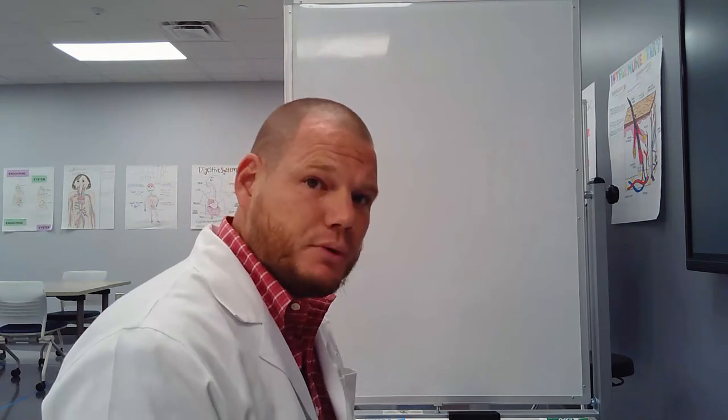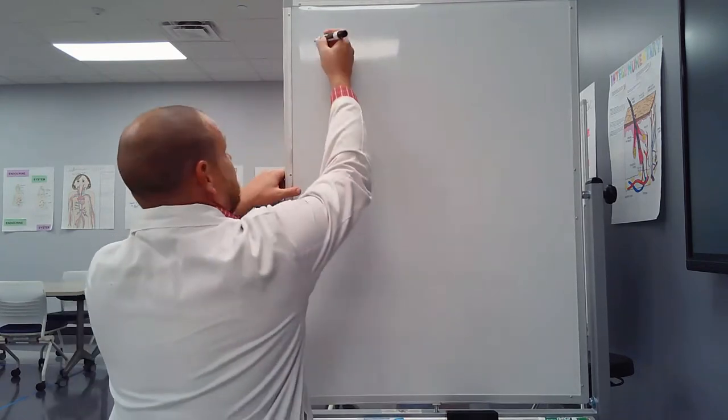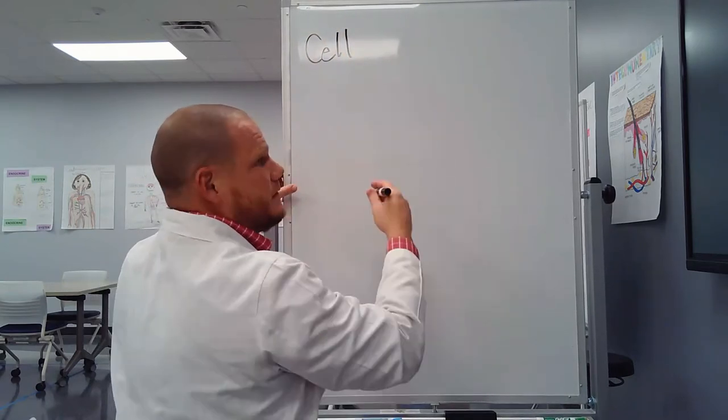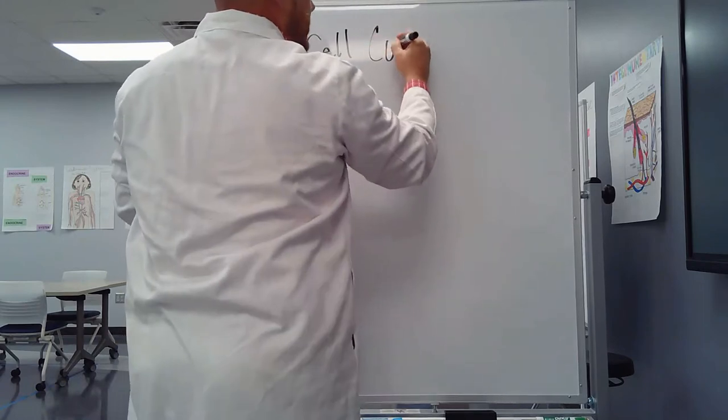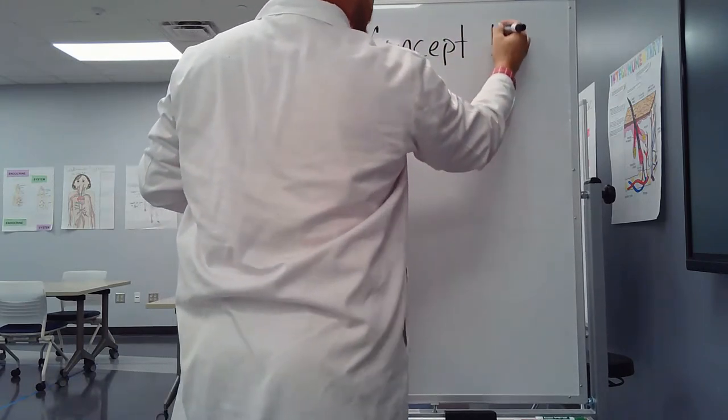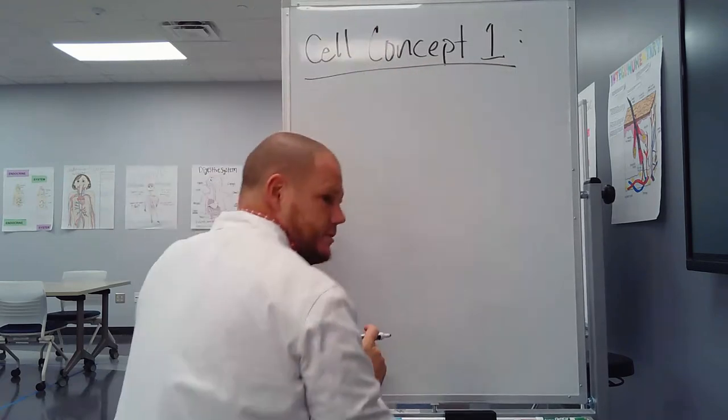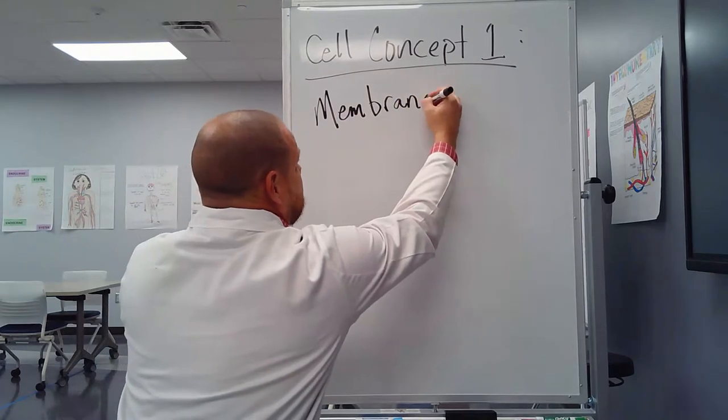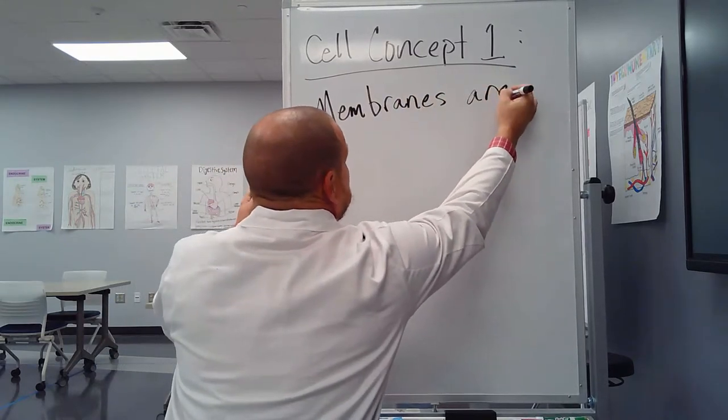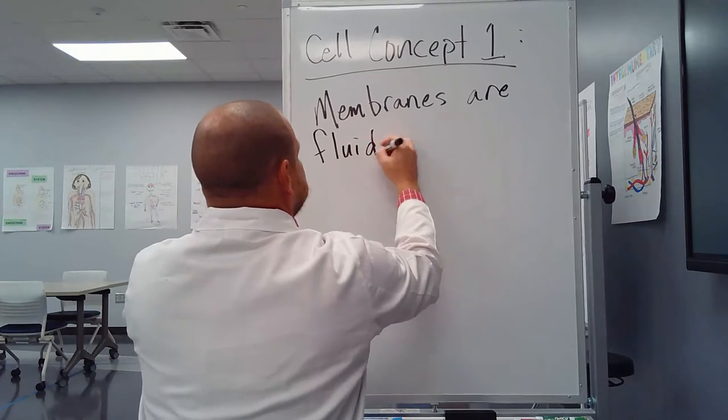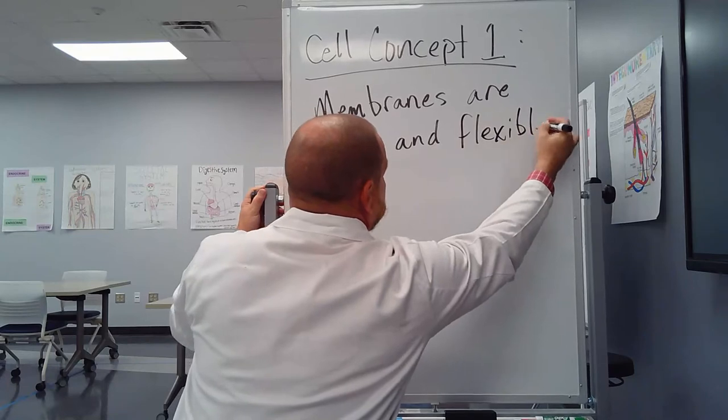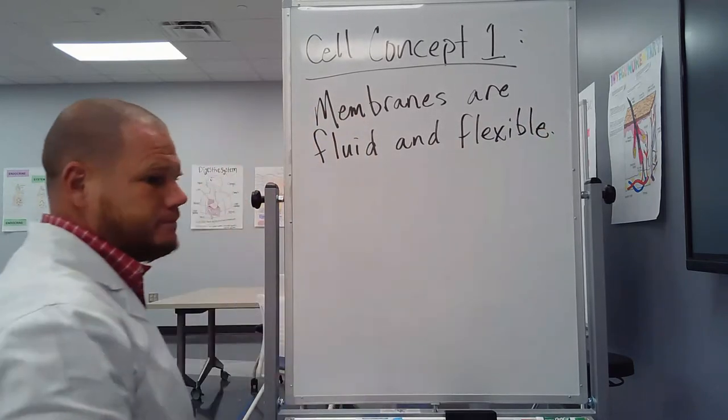So I'm going to erase this. Alright. So the first concept or property of a cell membrane that a soap bubble can demonstrate for us is that the cell membrane is really fluid and elastic. This is cell concept one. I'm going to call them cell concepts, properties of a cell membrane. So cell concept one. This one states that membranes are fluid and flexible.